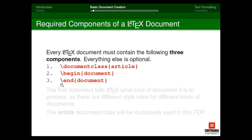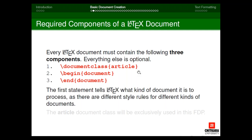The first statement tells LaTeX what kind of document to process. Since we focus on research documents, we write 'article' as the class. Options written in square brackets before the class name are completely optional — you may omit them. Whatever is mandatory goes in curly braces. Different classes include: book, report, article, and letter.